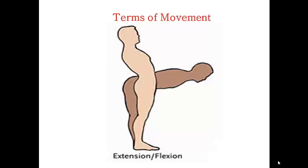Terms of movement. In anatomy, we describe movement with specific terms. We'll start with flexion and extension. Flexion is when you decrease the angle between two parts. Extension is when you increase the angle between those two parts. So when you kneel down, you are flexing, and when you straighten up from that kneel, you are extending.